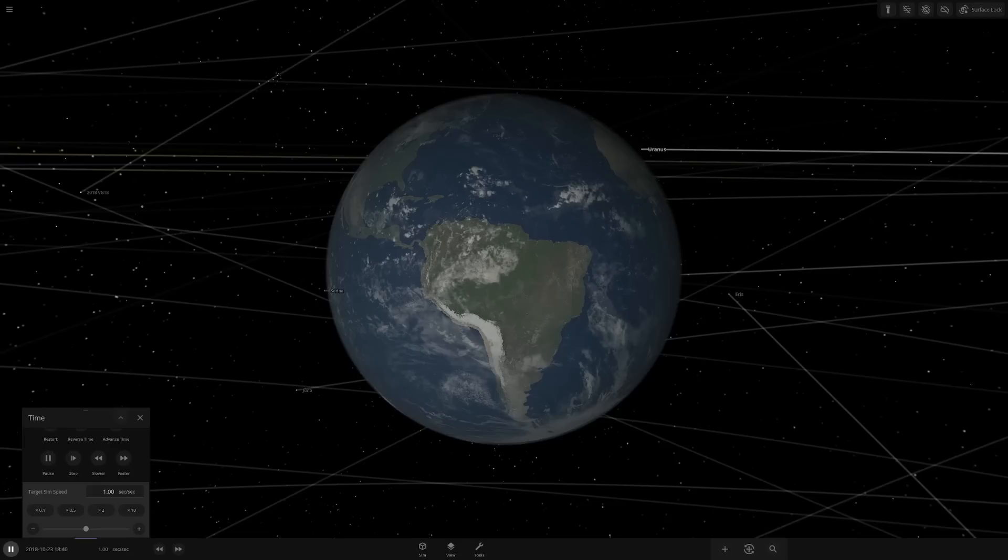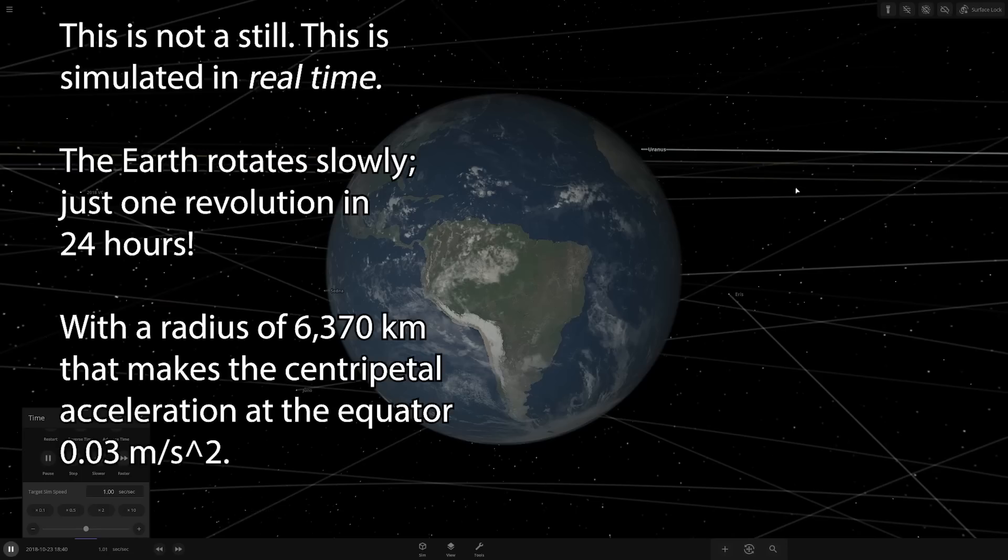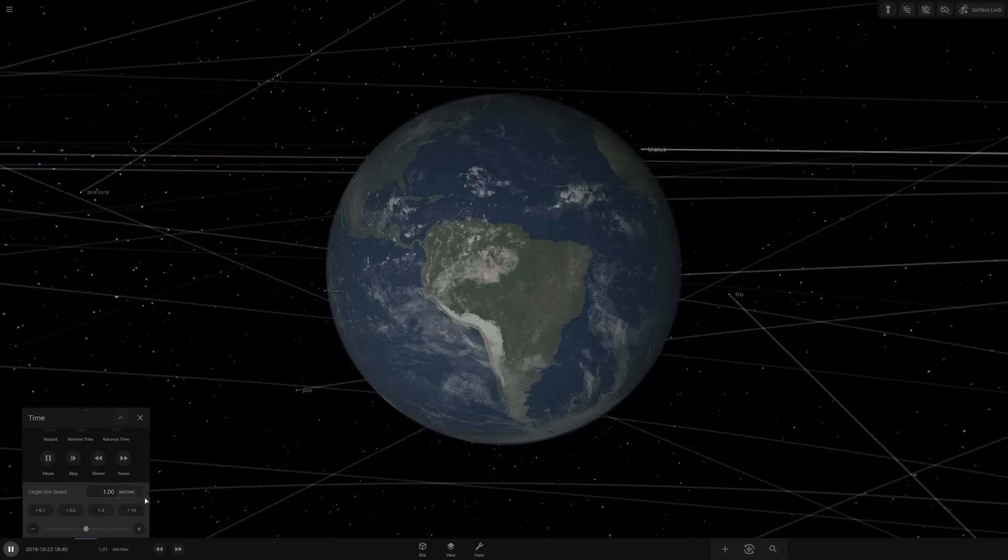Now, the question we need to address next is, what is the acceleration we should expect to experience from the Earth's rotation? At the equator, where it's at its maximum, the centripetal acceleration, what we would experience as a centrifugal acceleration, is 0.03 meters per second squared, which one, we should not expect to feel, and two, is already included in G. In other words, it's acceleration that we experience all the time, and therefore we don't pay attention to it. But still, this is a very small acceleration. It's the rate of acceleration of a car that goes from 0 to 100 kilometers per hour, or 60 miles per hour if you will, in 15 minutes.